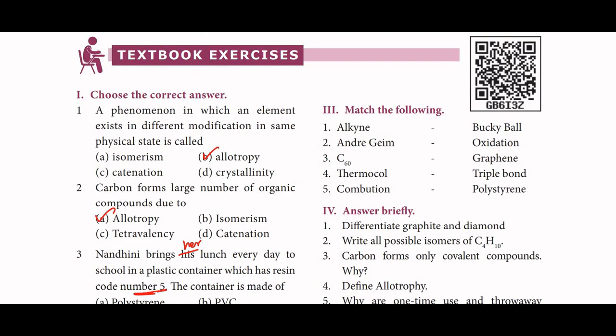Match the following: Alkyne matches with triple bond. Graphene matches with its structure. C60 is buckyball. Thermacol matches with polystyrene. Combustion matches with oxidation. The order of answers is 3, 5, 2, 1, 4.